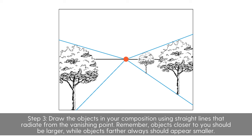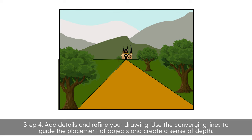Step 3: Draw the objects in your composition using straight lines that radiate from the vanishing point. Remember, objects closer to you should be larger, while objects farther away should appear smaller. Step 4: Add details and refine your drawing. Use the converging lines to guide the placement of objects and create a sense of depth.